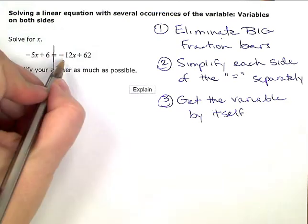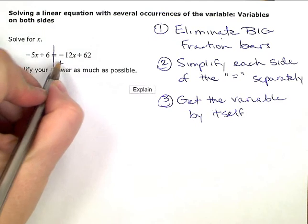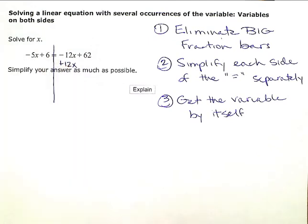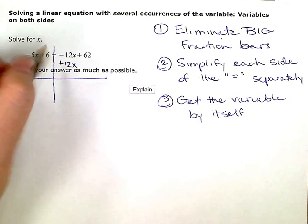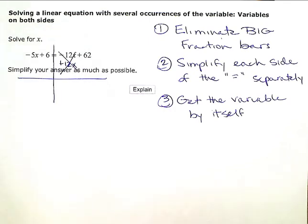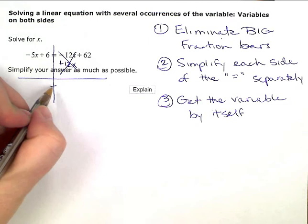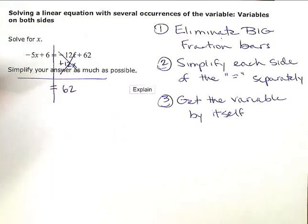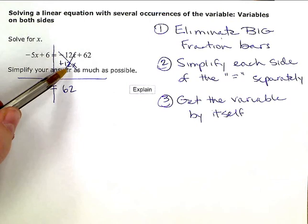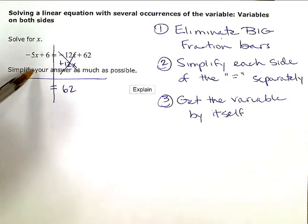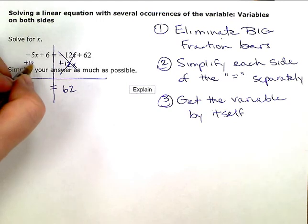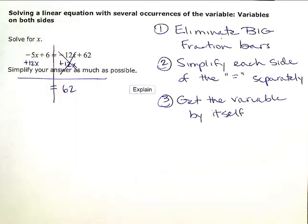So the opposite of negative 12x is positive 12x. If I combine those two together, then those eliminate, they go to zero, and all I'm left with on the right side is the 62. Over here, though, to keep my equation balanced, since I added 12x on the right side, I have to balance it out now by adding 12x on the left side. So negative 5x plus 12x, that leaves me with 7x's on the left plus 6.